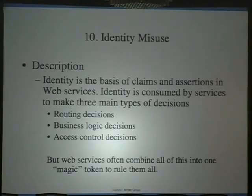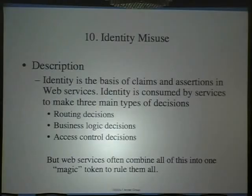The problem we're talking about in identity misuse is that routing decisions, business logic decisions, and access control decisions are three very different types of decisions. Ideally, these can and should be vouched for by different authorities. But unfortunately, web services, just like web applications, combine all these into one magic security token that we use for all of them.